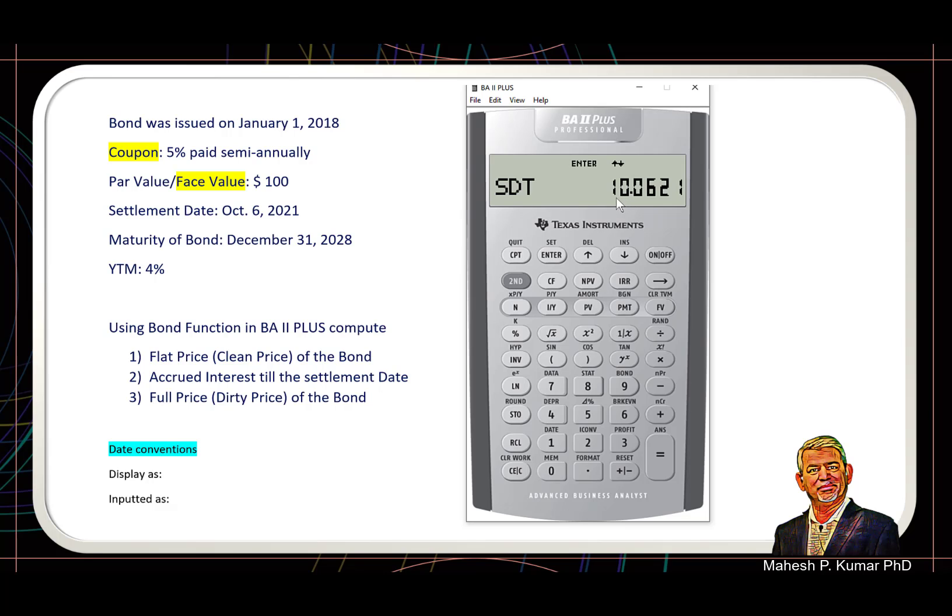So this is the format in which it goes into the system. Display date is different—display of the date happens differently. But when we enter the date into US format, we first enter two digits for the month. Here we have the month of October, so this is 10. After that there is a dot, and then 06 is for the day, 6th date, and then 21 is for the year.